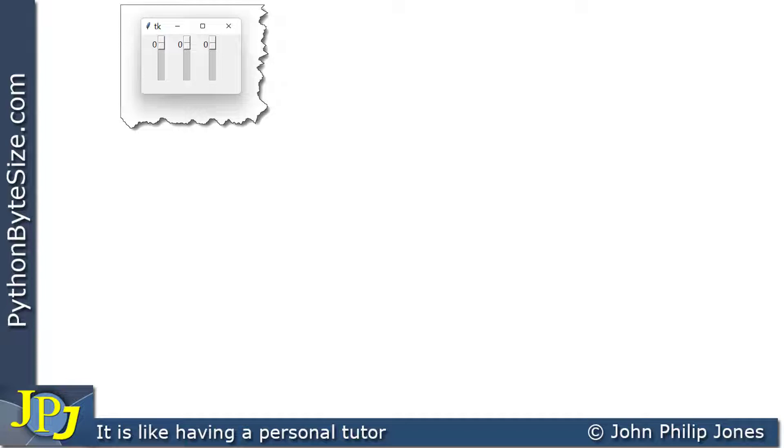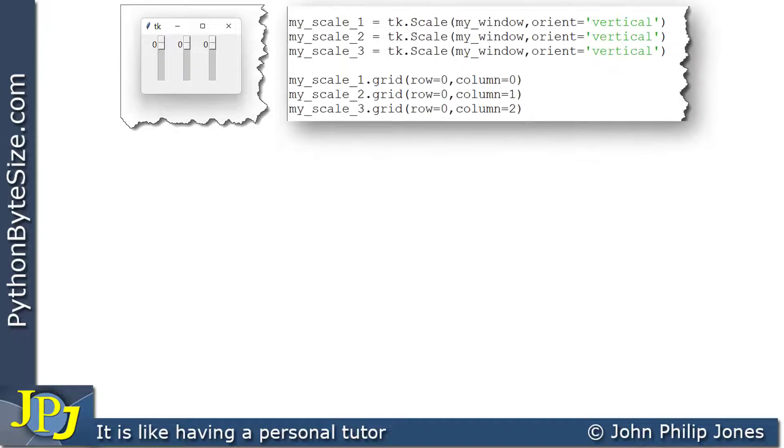The snippet of code that's responsible for producing the scale widgets and positioning them is shown here. And you can see when we created the widgets, we made them all vertical. And when we positioned the widgets, you can see these are the values we gave to the row and the column.